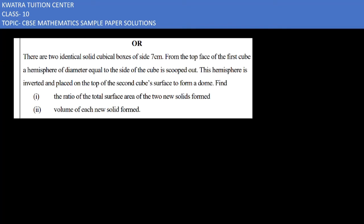Now the next one, 34th question only, but the OR part of it. It says there are two identical solid cubical boxes of side 7 cm. From the top face of the first cube, a hemisphere of diameter equal to the side of the cube is scooped out. This hemisphere is inverted and placed on the top of the second cube's surface to form a dome.